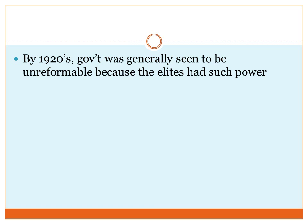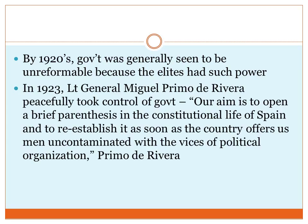In 1923, Lieutenant General Miguel Primo de Rivera peacefully took control of the government. He stated: 'Our aim is to open a brief parenthesis in the constitutional life of Spain and to reestablish it as soon as the country offers us men uncontaminated with the vices of political organization.' Basically, he wanted to pause, reset the political culture, get rid of corruption, and then begin anew in a constitutional democratic country.